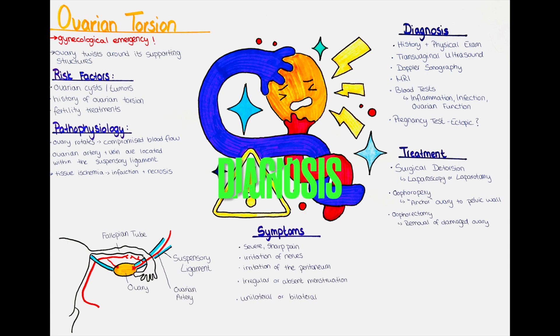How can we diagnose ovarian torsion? We usually start by taking a detailed medical history, including symptoms, duration and any risk factors. Then we will perform a physical examination, which typically involves palpation of the abdomen and pelvic region to assess for tenderness, presence of a mass or other signs suggestive of ovarian torsion.